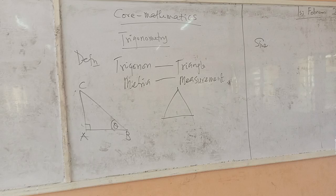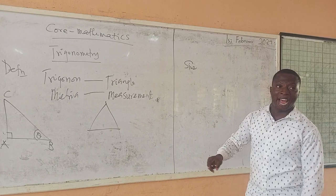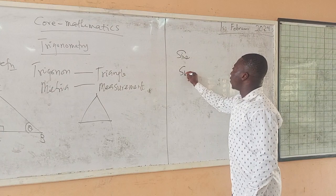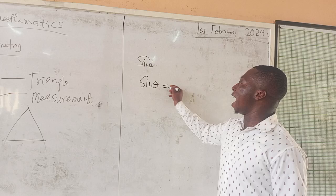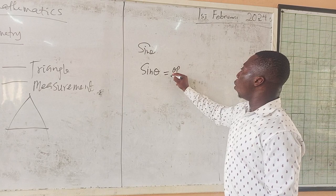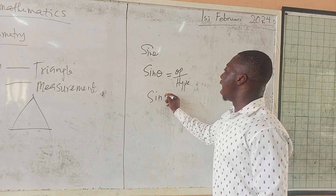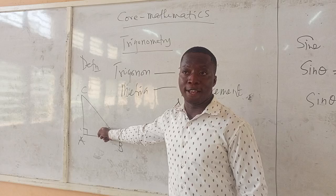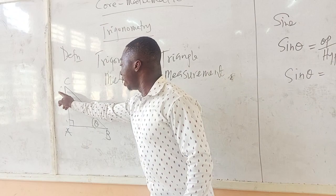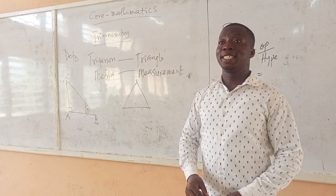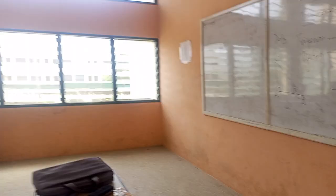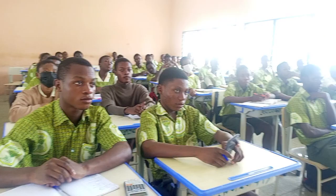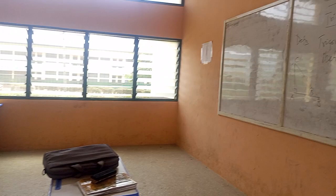Sine is one of the trigonometric ratios. We are going to talk about the sine of an angle — sine theta. Using the right-angled triangle, sine theta is equal to opposite over hypotenuse. Per the diagram, the angle is at B, so the opposite side is line AC, and the hypotenuse is line BC. Therefore, sine theta equals AC over BC.